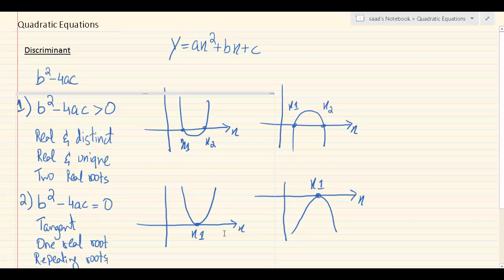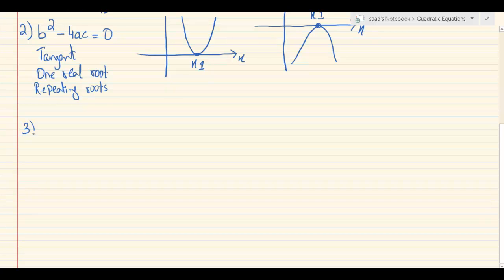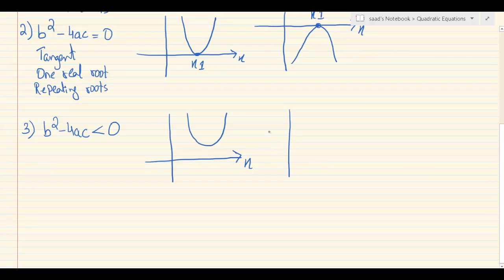Moving on to the third case. Number three is b squared minus 4ac comes out to be less than zero. This is the only possibility that's left. In this case our quadratic curve will neither touch or even intercept the x-axis. So if it's a minimum curve it will be lying above the x-axis, or if it's a maximum curve it will be lying below the x-axis.